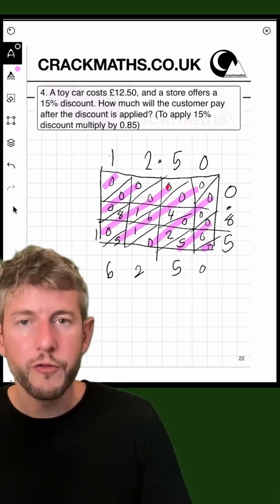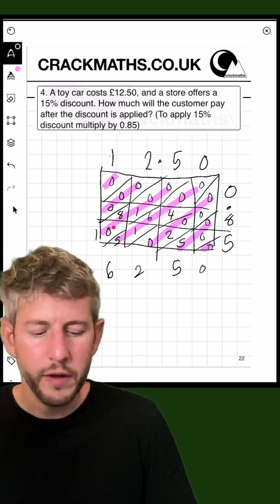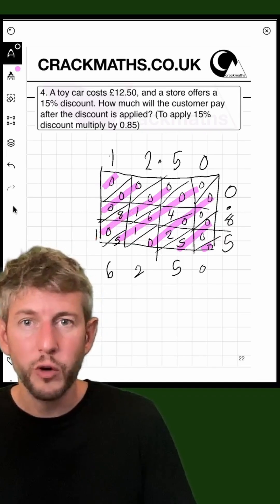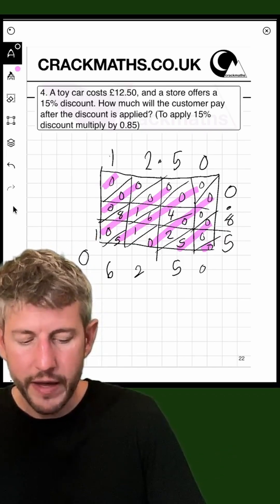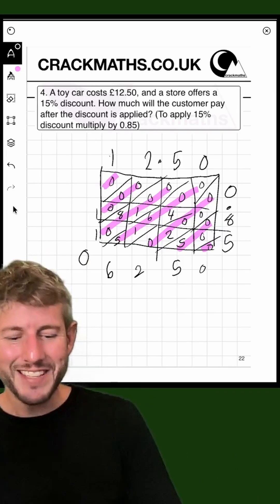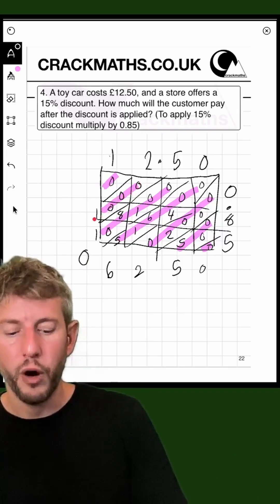And then what we've got is 0, add 0, add 1, add 8, add 0, add 1. Well, we've just got to add the 8 and the 1s. So 8, add 1, add 1 makes 10. So I put a 0 here, and I'm going to carry the 1 there. In this diagonal, we only have the 1, so that's just going to make 1.